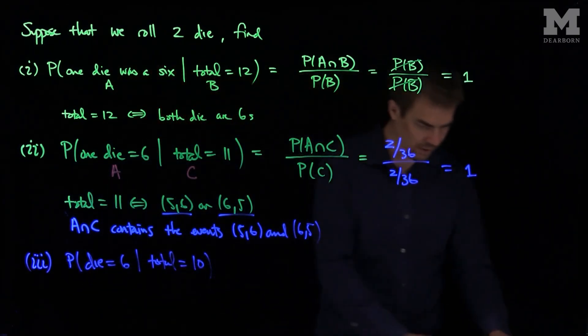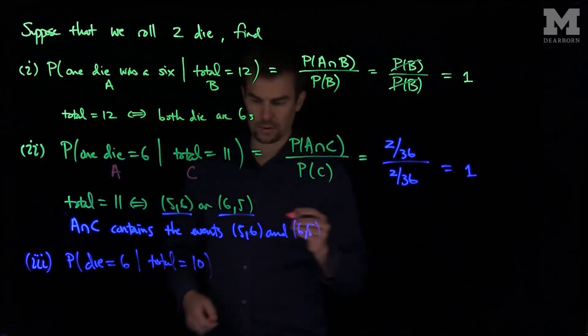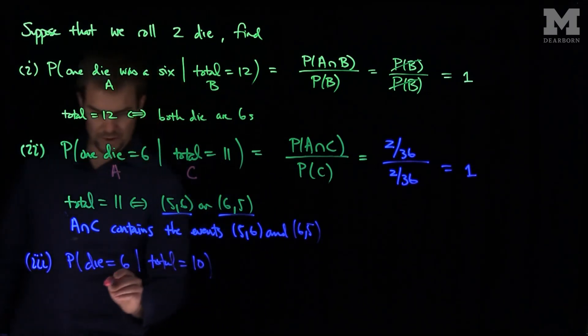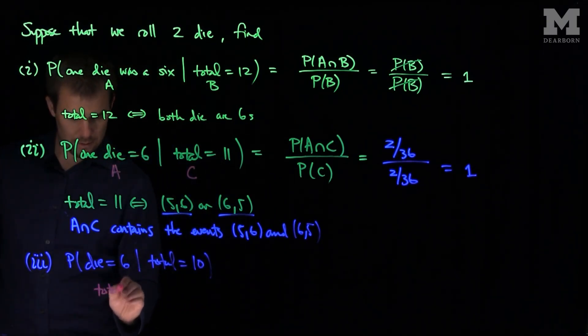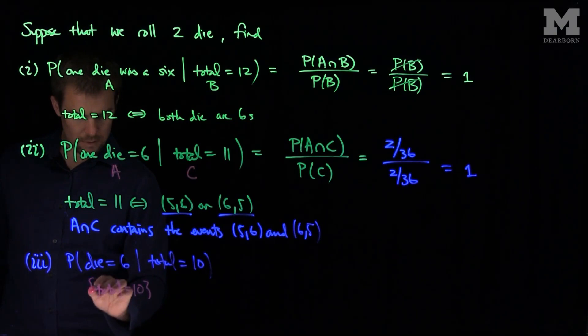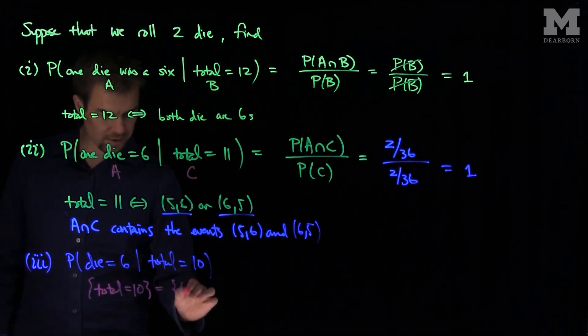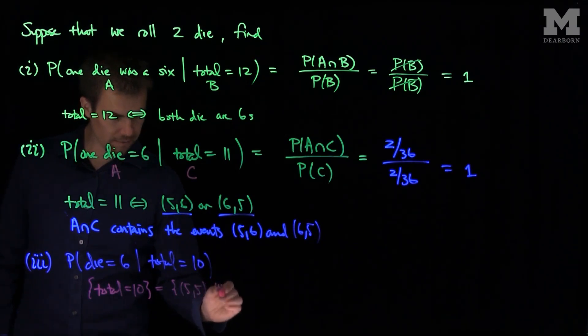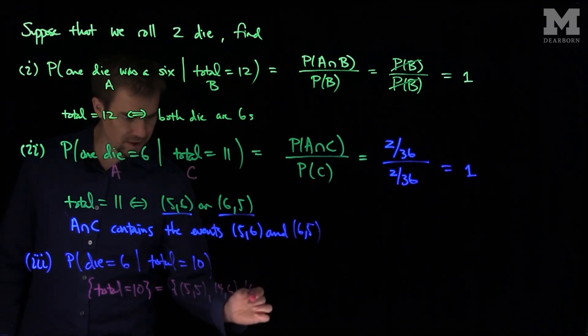Well, now we have a couple different possibilities over here. So we have the possibility, so the total is 10, corresponds to the events. You can have a 5 and a 5, you can have a 4 and a 6, or you can have a 6 and a 4.